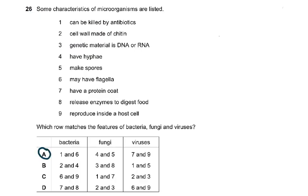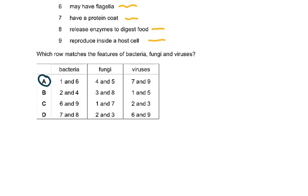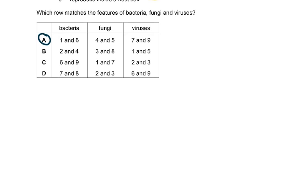Question 26: some characteristics of microorganisms are listed. Can be killed by antibiotics — that's bacteria. Cell wall made of chitin — that's a fungus. Genetic material is DNA or RNA — that's a virus. Have hyphae — fungus. Make spores — fungus. May have flagella — bacteria. Have a protein coat — virus. Use enzymes to digest food — bacteria or fungi. Reproduce inside a host cell — virus. You needed to know all that to answer this question.